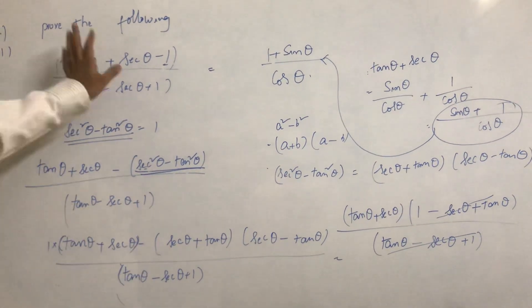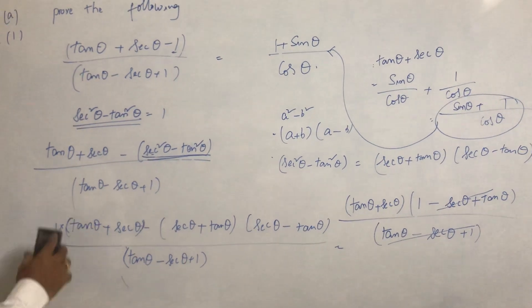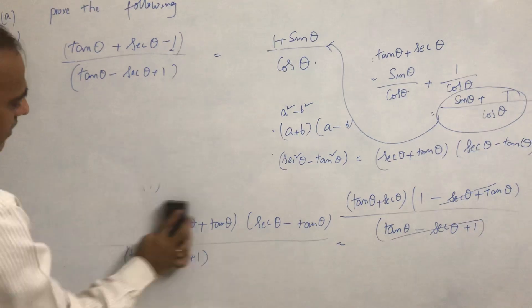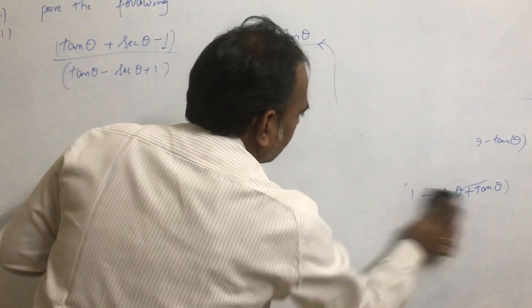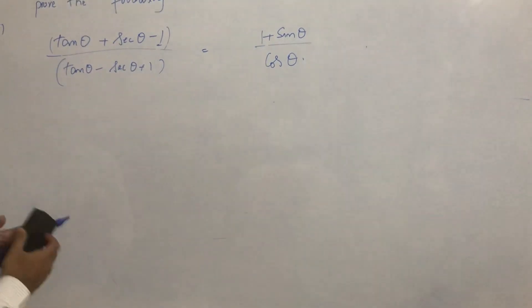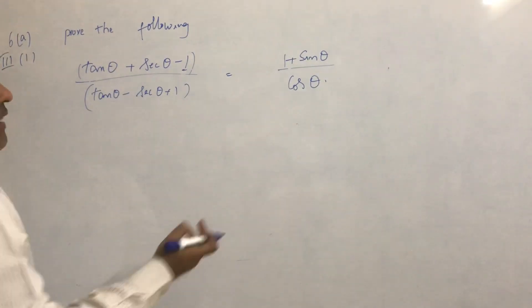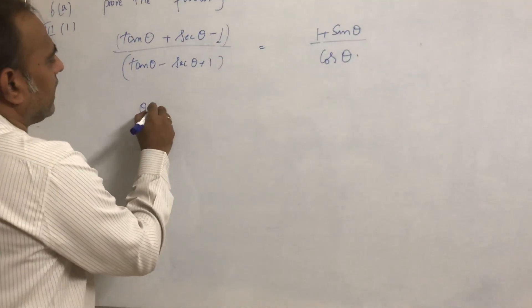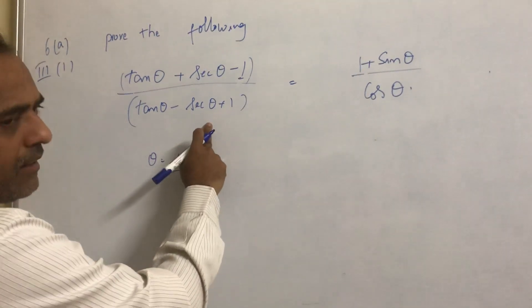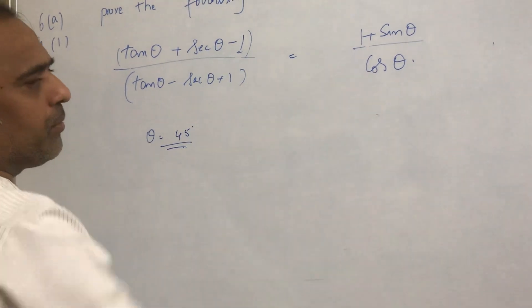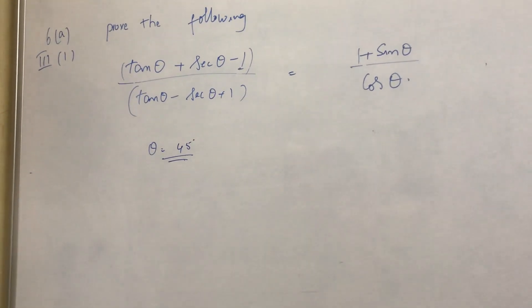If you have no questions, note this down. These types of questions are normally asked as four-mark questions. Another way to check whether LHS equals RHS is to consider θ = 45°. Evaluate the left-hand side and evaluate the right-hand side — both should be equal. This is a quick way to verify.